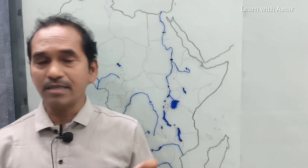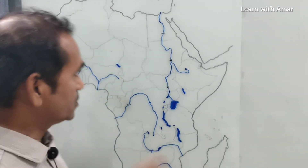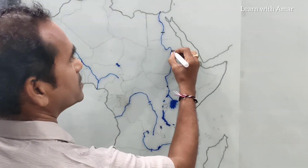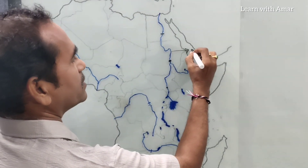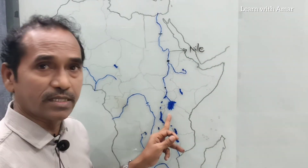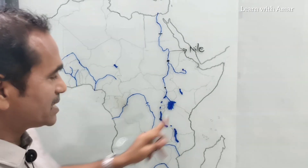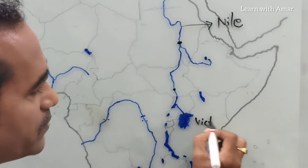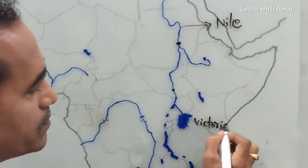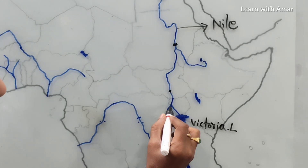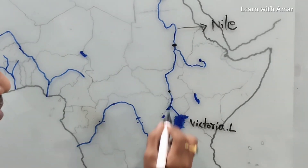Now, tell me what is the longest river in the world? It is River Nile. This one is the longest river in the world. River Nile originates from Lake Victoria. From here it goes and touches Lake Albert.